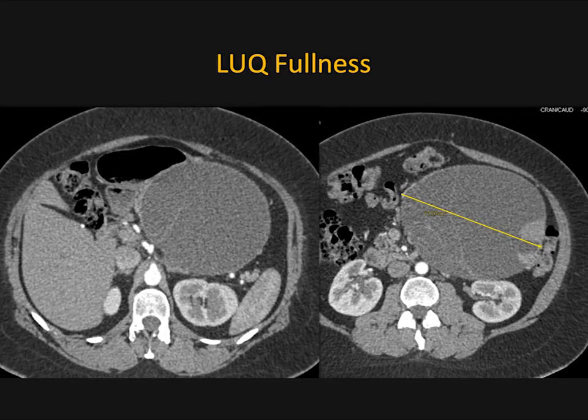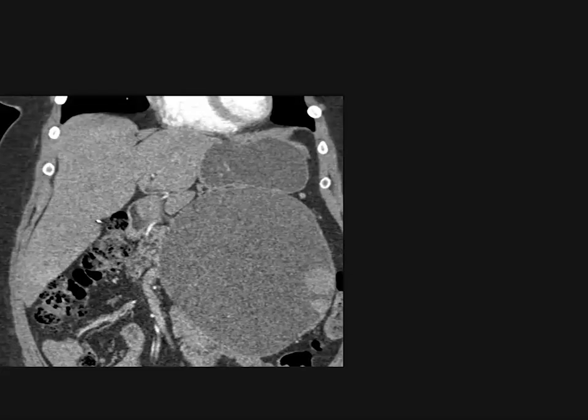Another example — left upper quadrant fullness; you can see why. Here I have a large cystic lesion, and if you look at about 3 o'clock, there's nodularity in the wall of the lesion. There are multiple thin septations, and this is substantially larger. When I first looked at this case, I would have said a cystadenoma, but the nodularity in the wall is somewhat concerning.